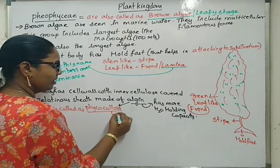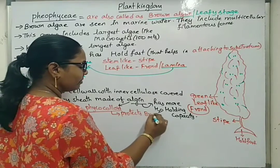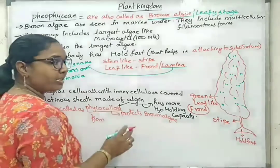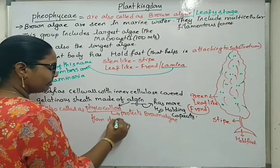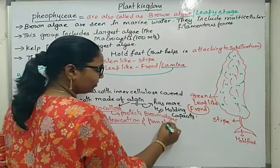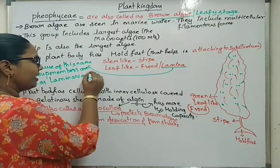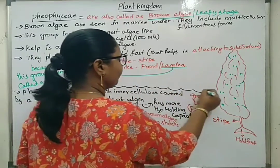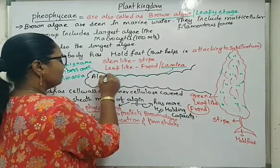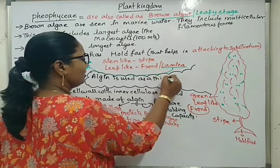Algin, in the form of a phycocolloid, protects brown algae from desiccation, damaging, and shocks. In general, we use algin as a thickening agent.